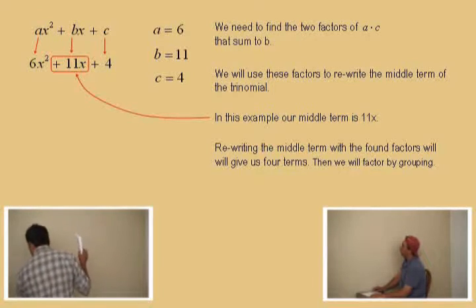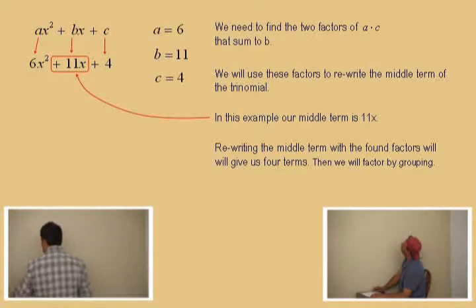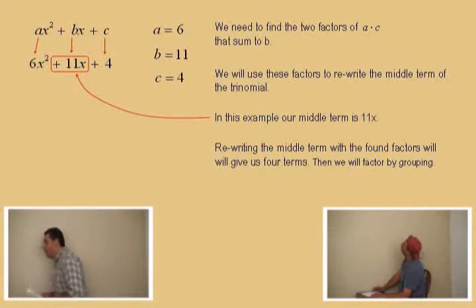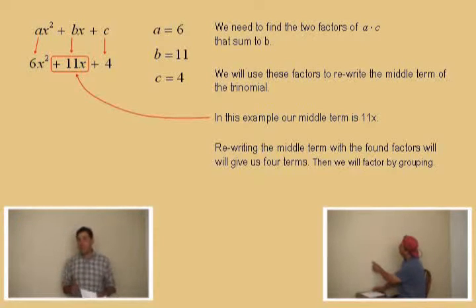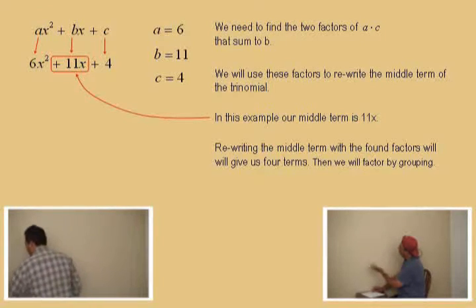So, we will use these factors to rewrite the middle term of the trinomial. In this example, our middle term is that 11x. There we go. And now, rewriting the middle term with the found factors will give us the four terms. And we need those four terms so that we can factor by grouping.